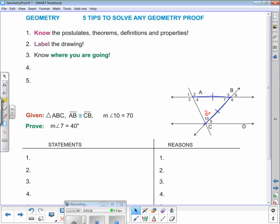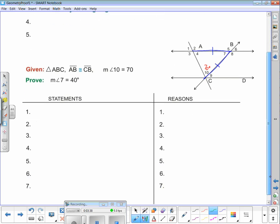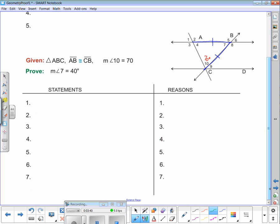Number three: know where you're going. Where you're going is what you're trying to prove. So in this proof, we're told to prove the measure of angle 7 equals 40 degrees. So I'm going to come down here at the bottom and I'm going to write measure of angle 7 equals 40 degrees.